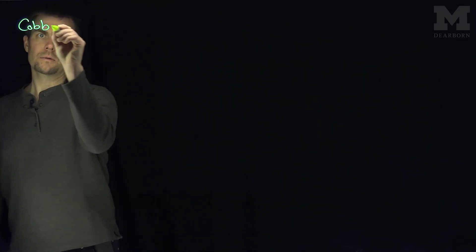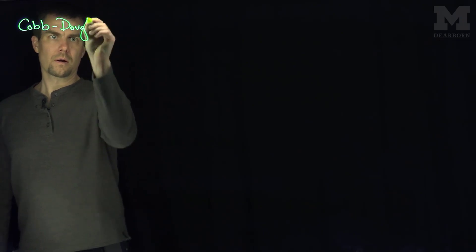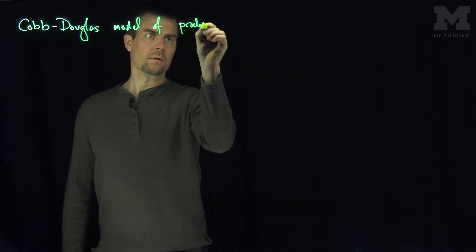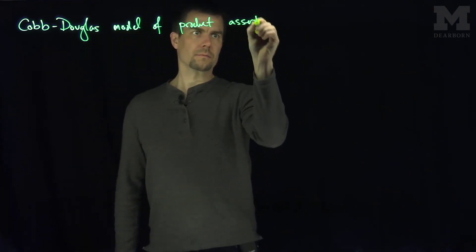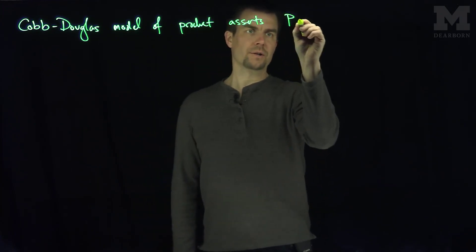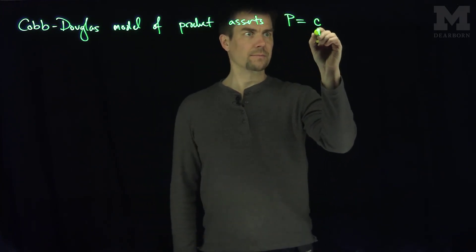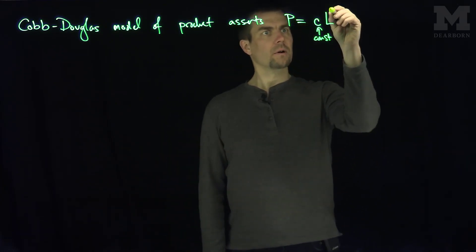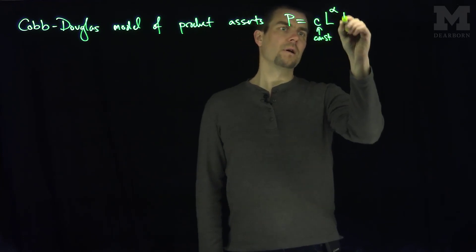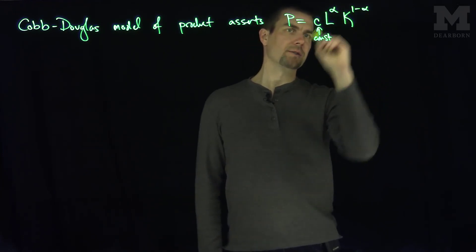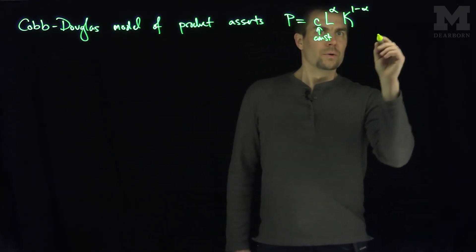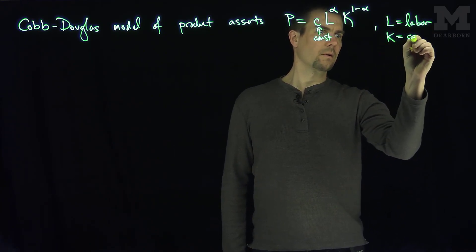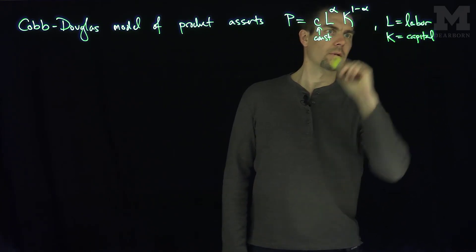The Cobb-Douglas model of production asserts that production is a constant C, times the labor to the power alpha, times the capital invested to the one minus alpha. So here, L is labor, K is capital, and P is production.